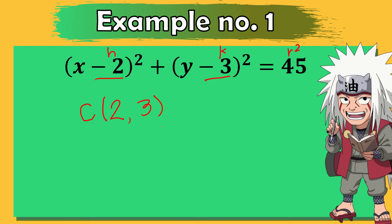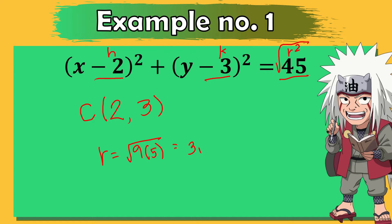Next we need to get the length of the radius. In the equation, the right side is r squared, so we need to take the square root. That means the square root of 45. Since 45 is not a perfect square, we factor it as 9 times 5, and since 9 is a perfect square, we get 3 square root of 5 units.